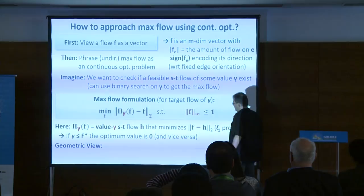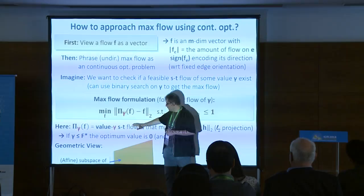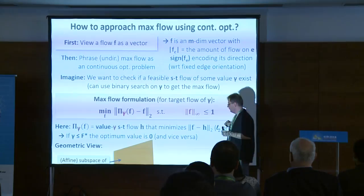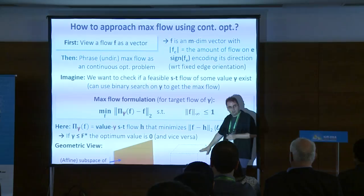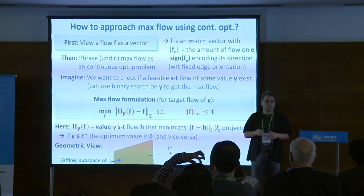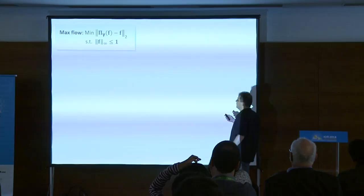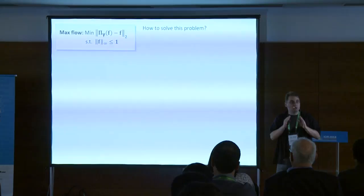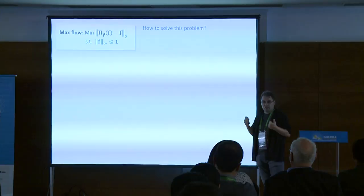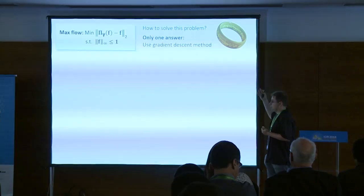We've now executed the first step of the meta-algorithm: phrasing our question as a continuous optimization question. Now for the second phase — we have to come up with an algorithm. The nice thing about the meta-algorithm is that the algorithm is always obvious. As I said, in continuous optimization there is always only one answer: gradient descent. What does it mean to apply gradient descent here? We start with some initial guess for the flow f — maybe an all-zero flow — and then try to improve this answer.